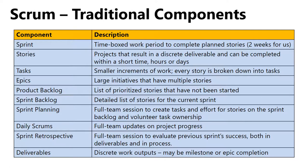Here are key Scrum component definitions to memorize, especially if you're moving from waterfall to agile. A sprint is a time-boxed work period to complete planned stories — typically two weeks. Stories are projects that result in a discrete deliverable completable in a short time. Tasks are the work items within stories. Epics are large initiatives made up of multiple stories. The product backlog is the prioritized list of all user stories or tasks.